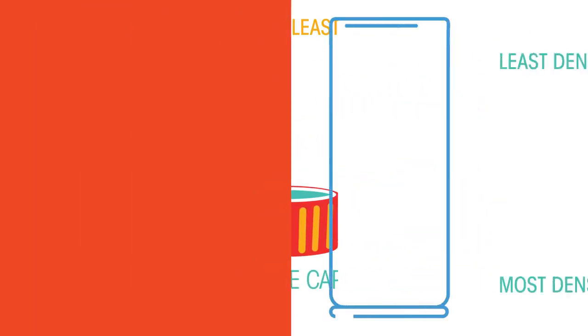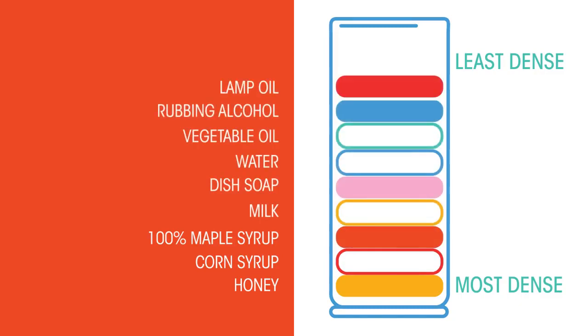Did you know that liquids and gases also have different densities? Look at this density tower of different liquids. The honey is most dense so sinks to the bottom, whereas milk is in the middle and lamp oil is the least dense.